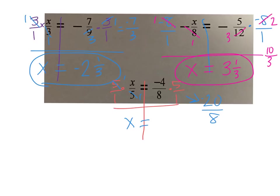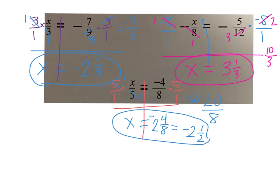On the right I'm going to have to simplify a bit more — I can't leave it improper. 8 comes out of 20 two times with 4 left over, so 2 and 4 eighths. It was negative 2 and 4 eighths, which we can simplify further — 4 eighths is just 1 half. So negative 2 and 1 half is our final answer.